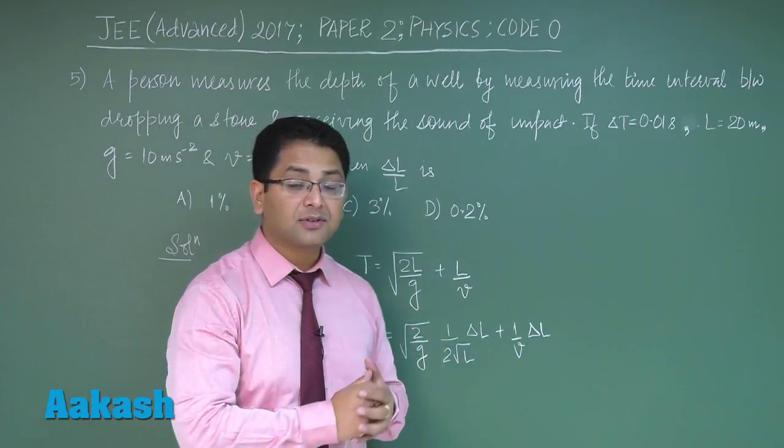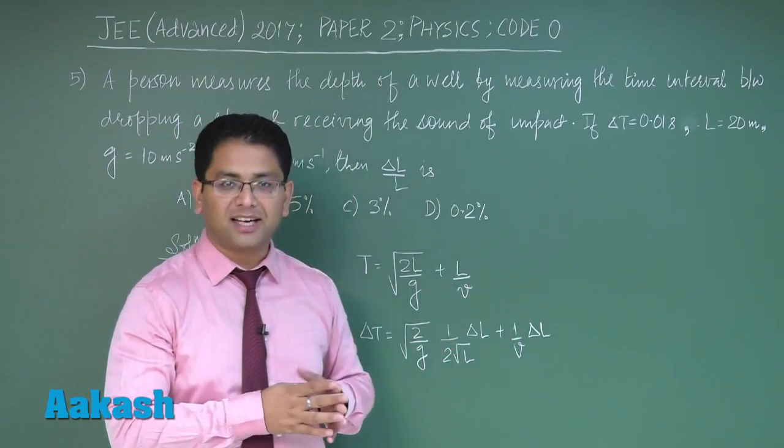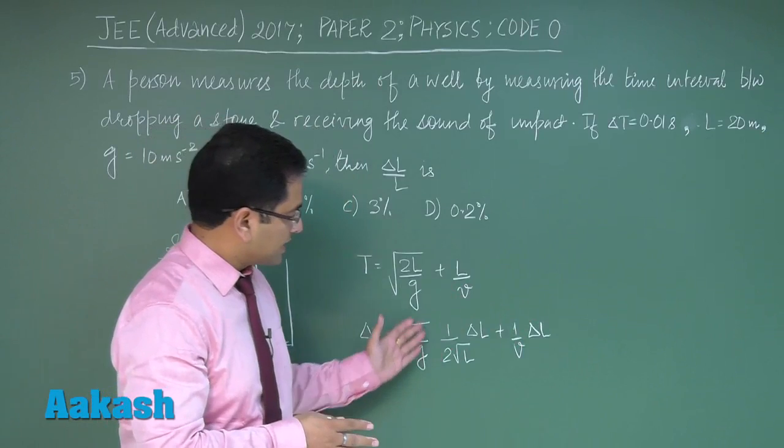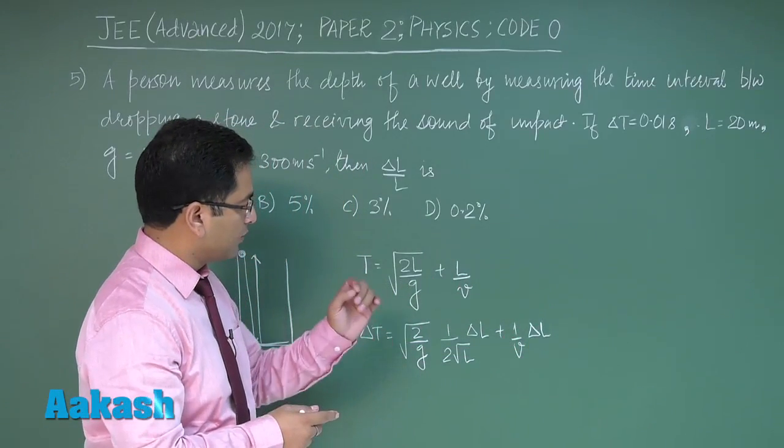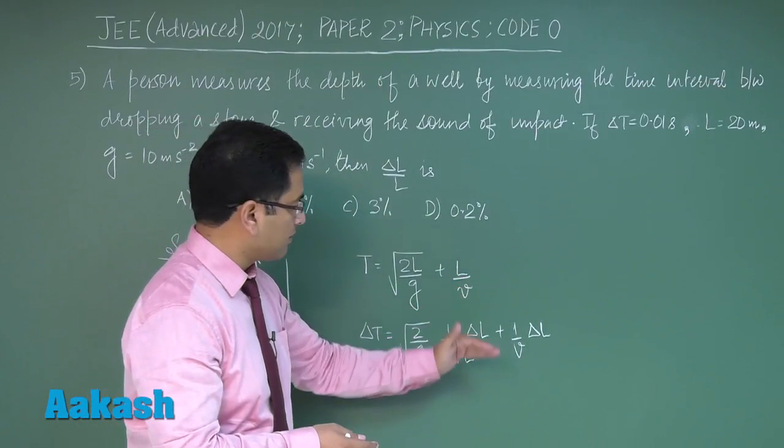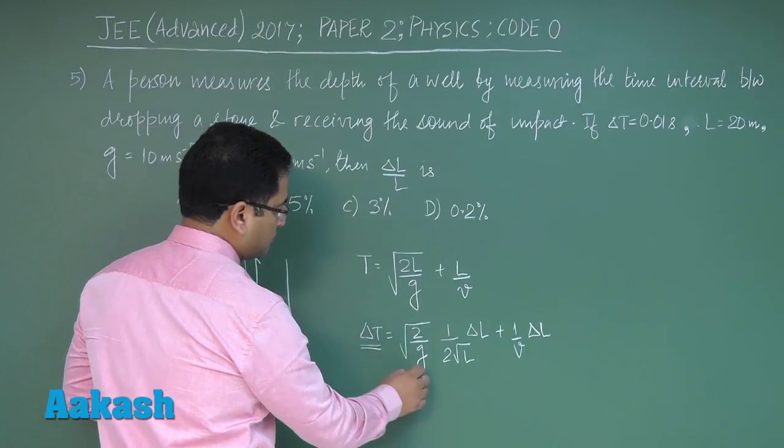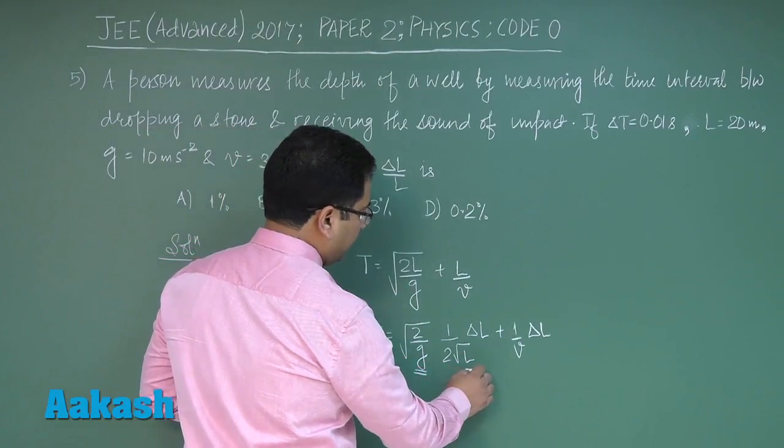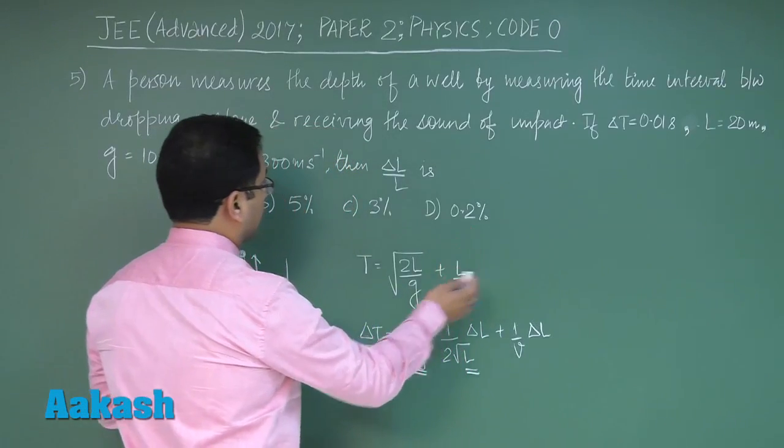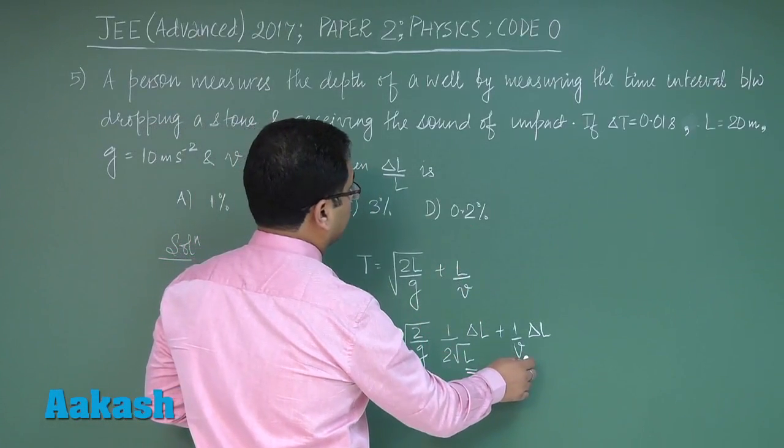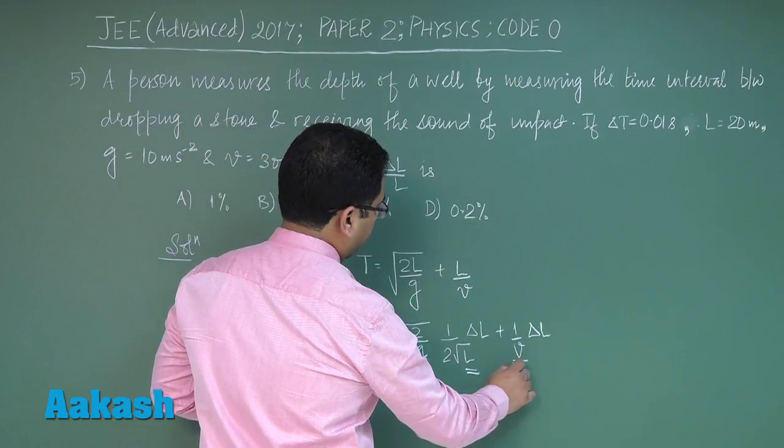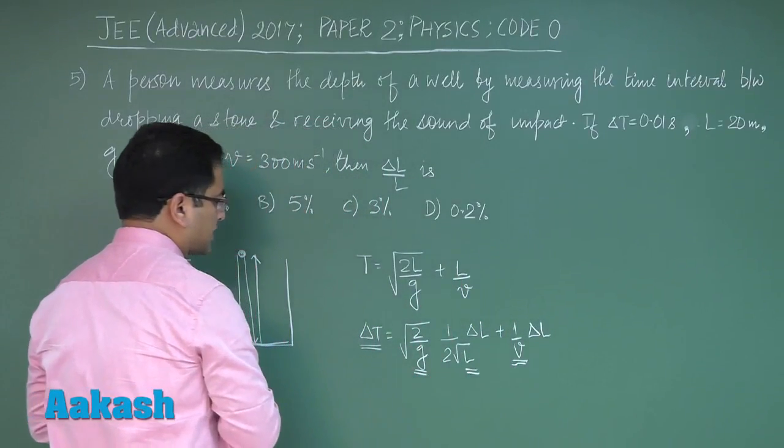From the given expression, you can see that we cannot calculate ΔL/L directly. But yes, ΔT is known, g is known, V is known, L is known. All we need is to put the values - from this we can calculate the value of ΔL.